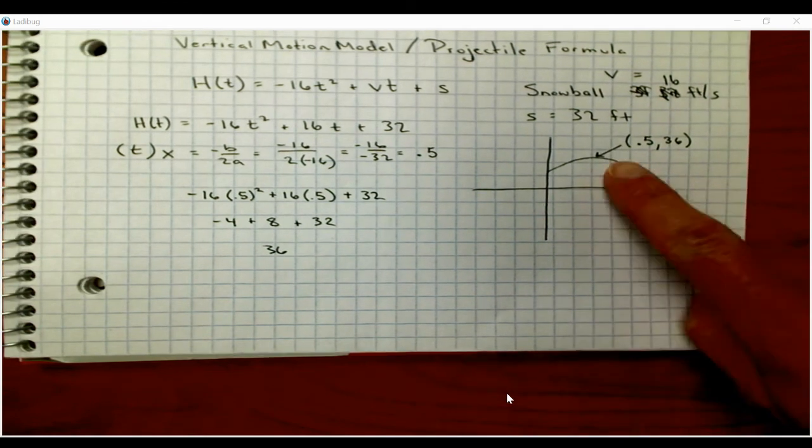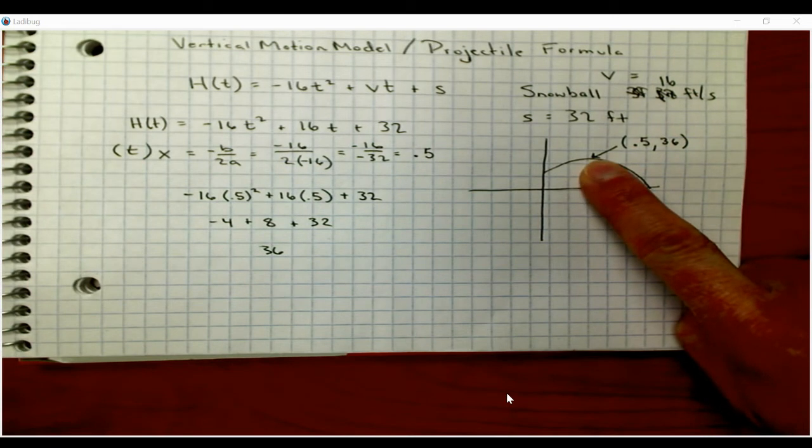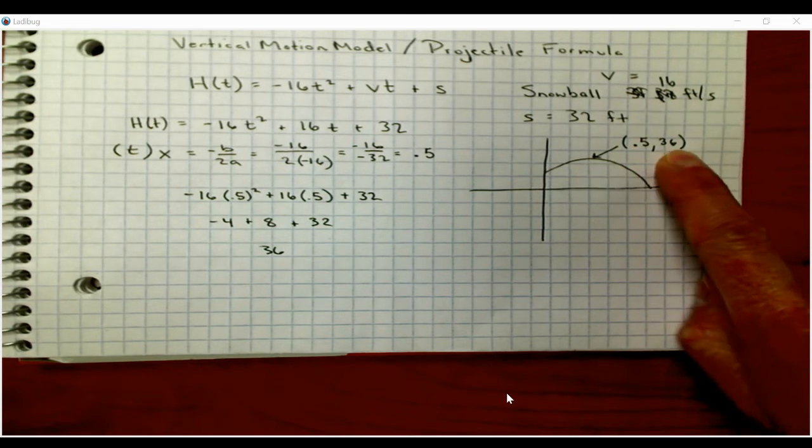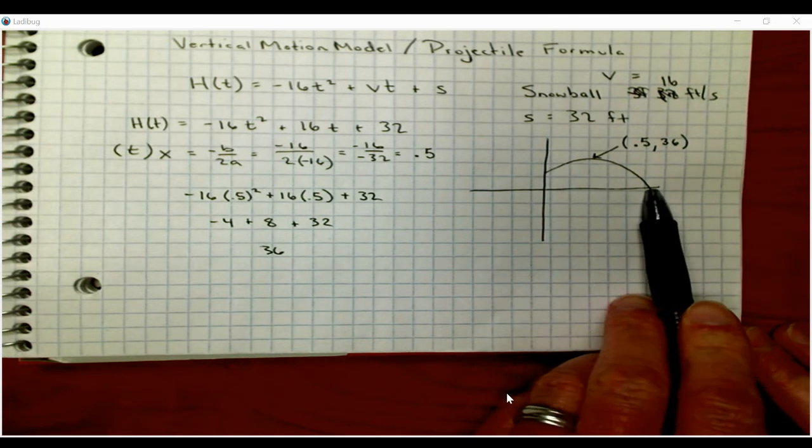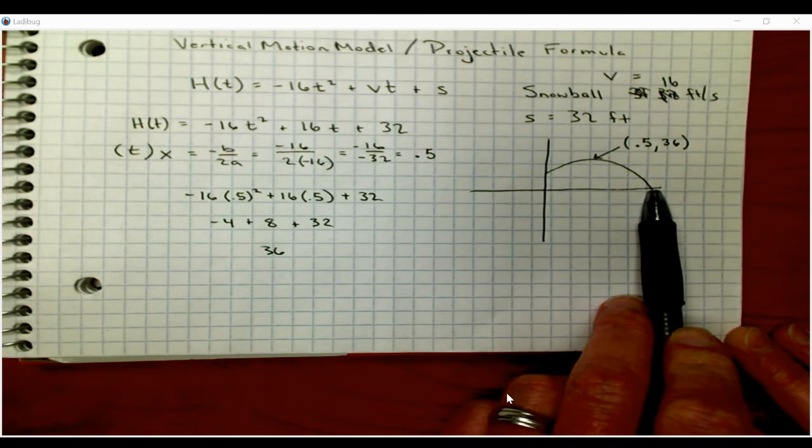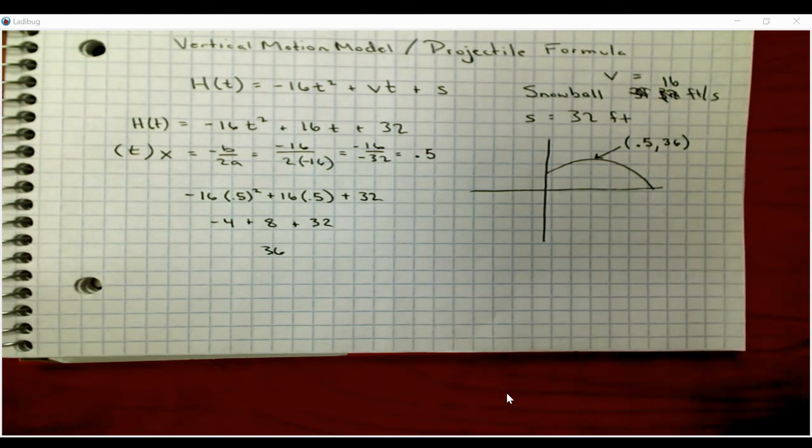We found the vertex, which is the maximum height that the snowball would get, and we know it got up to 36. The next part is finding when it hits the ground. Well, anytime something hits the ground, it's going to be at a height of zero, right? Because it's sitting on kind of our baseline.